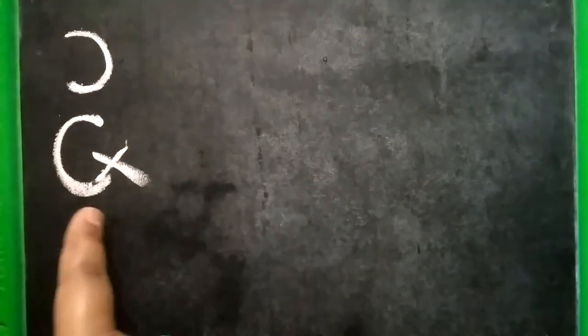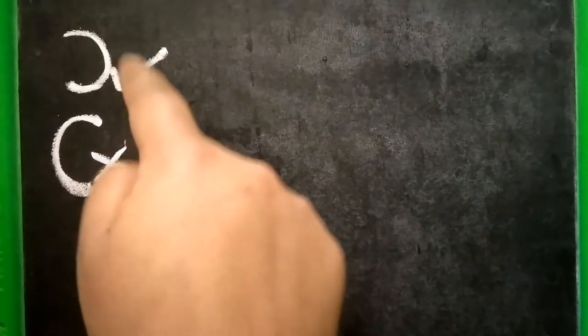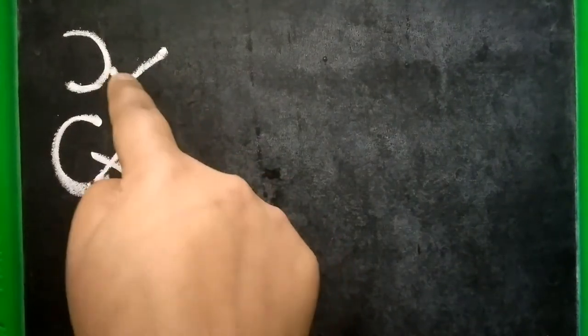Curve backward looks like a C. We don't need this curve when we write number 3. We don't need curve backward. We need curve forward when we write number 3. Curve forward is the pattern we need for number 3. Alright.